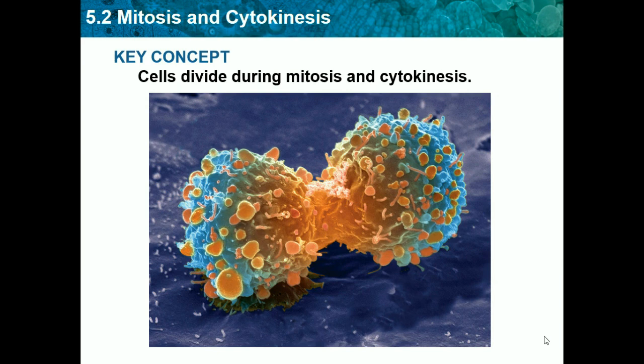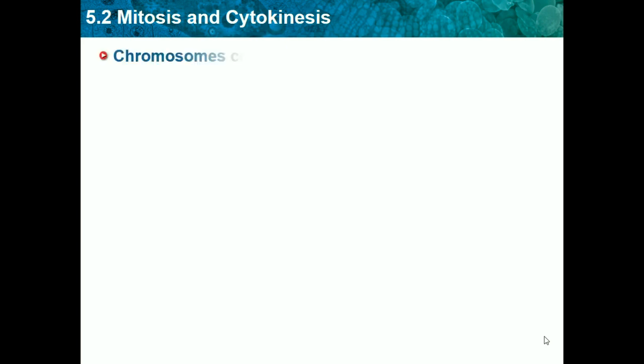Our key concept is: cells divide during mitosis and cytokinesis. In our last video, which was all about the cell cycle, we saw what the cell does and how it grows throughout its life. The last two terms we met in that video were mitosis and cytokinesis. These two terms relate together — cytokinesis is part of mitosis, though some people consider them two separate things. Mitosis is where a cell divides, and today we'll be going into the stages and how it actually does this.